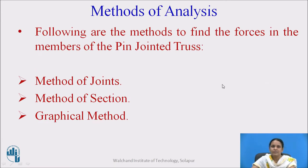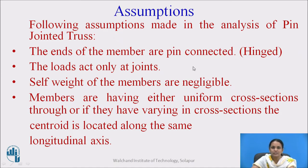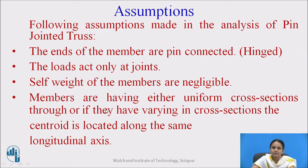To analyze the plane frames, we have three methods: method of joints, method of section, and graphical method. The assumptions we consider during analysis are: the ends of the members are pin-connected or hinged; loads act at the joints only; we neglect the self-weight of the members; and the members have either uniform or varying cross-section with the centroid located along the same longitudinal axis.